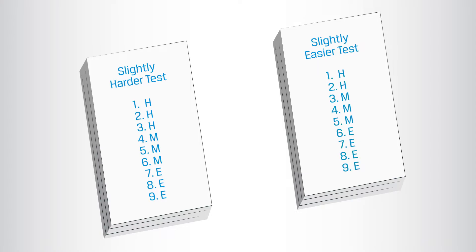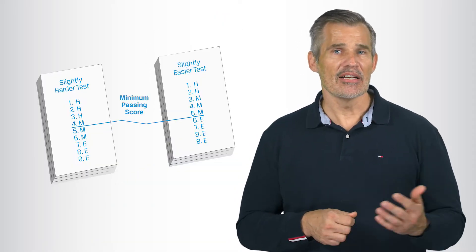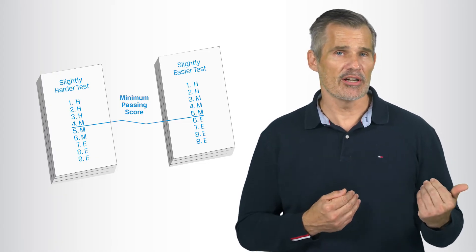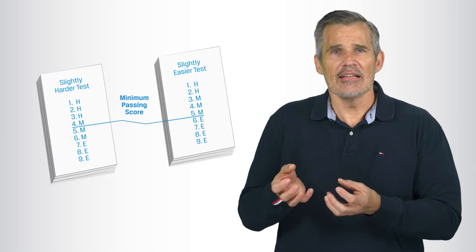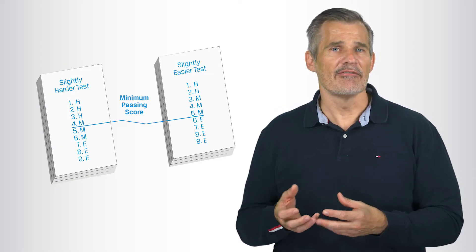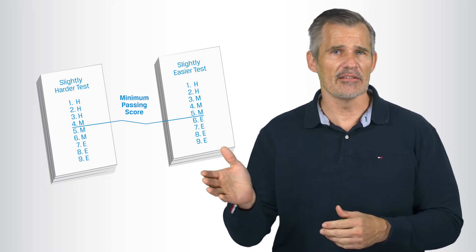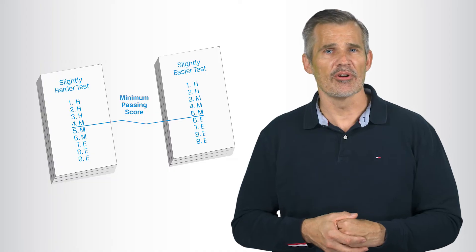If the slightly harder version of the test was used in standard setting, then that minimum passing score effectively becomes our benchmark. Later, when we administer the other version of the exam, the basic effect of equating is to shift the whole scale slightly on the slightly easier exam. For example, if the MPS was four on the harder version — in other words, candidates needed to get four questions right to pass — then when we take the slightly easier exam form, you might expect them to get five or even six of those questions correct. That's why we adjust the scale. As depicted here, candidates now need to get five questions right in order to pass.